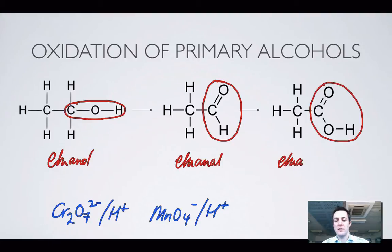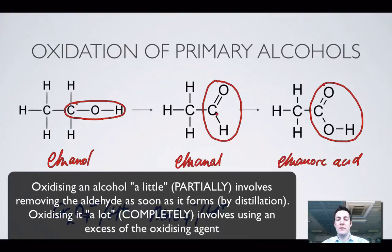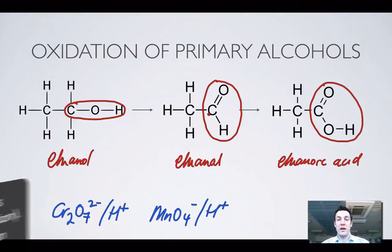So here's ethanoic acid. I've done it with a two-carbon chain but I could have done it with any length chain. As long as I've got a primary alcohol I can oxidise that alcohol a little bit and turn it into an aldehyde, and I can oxidise it a lot and turn it into a carboxylic acid. Alternatively, I could just start with an aldehyde and oxidise that to a carboxylic acid.